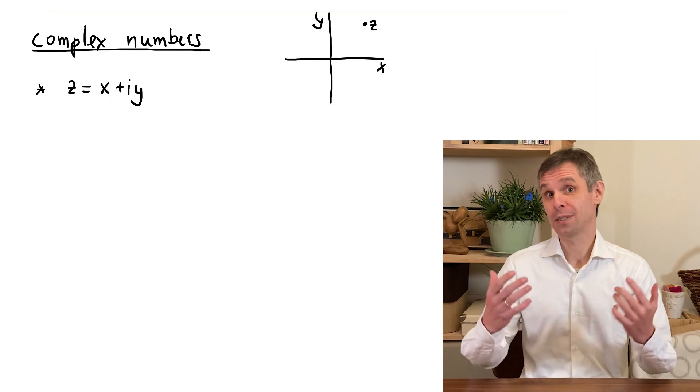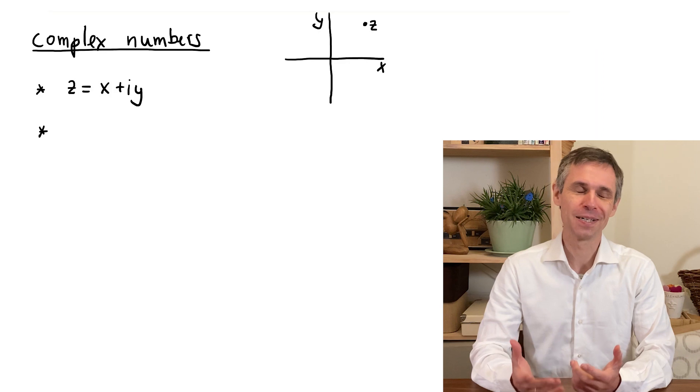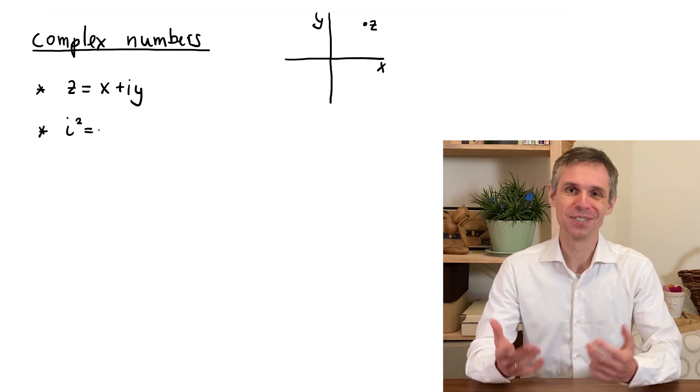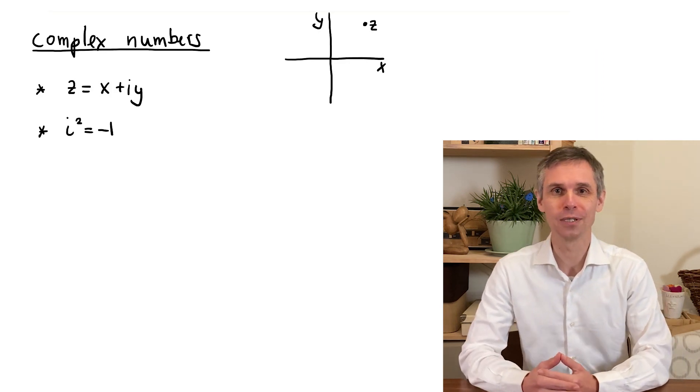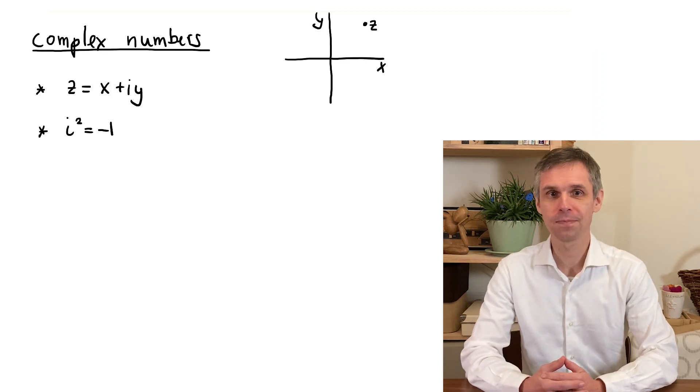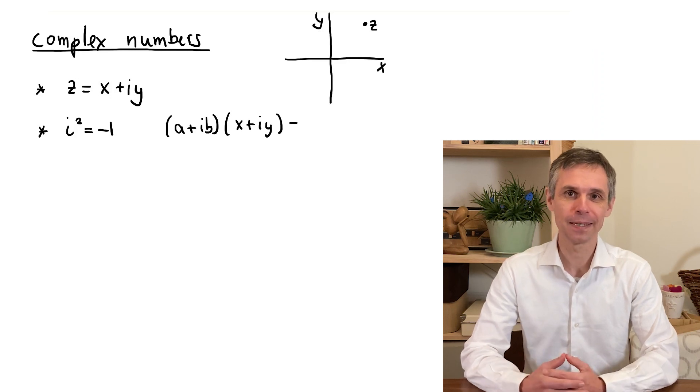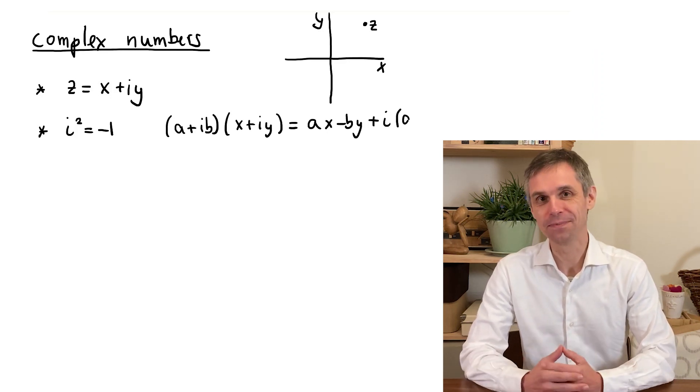For algebraic calculations, you just need to know a single additional rule, namely that i squares to minus 1, which is indeed the definition of the imaginary unit. With this, you can multiply two complex numbers, such as a plus ib and x plus iy, and the result is just another complex number.